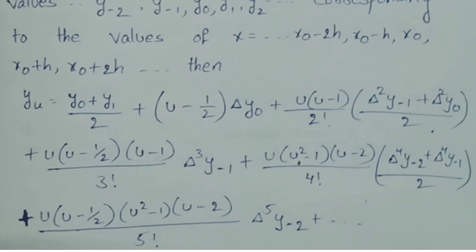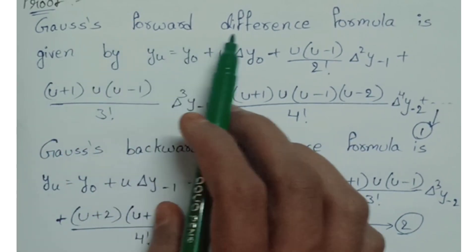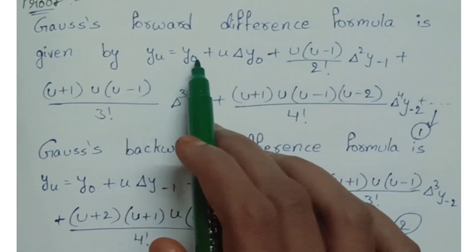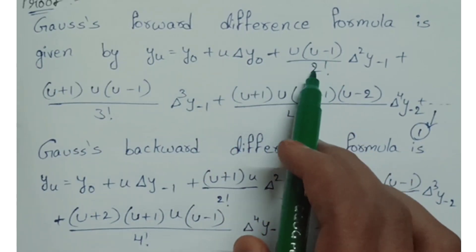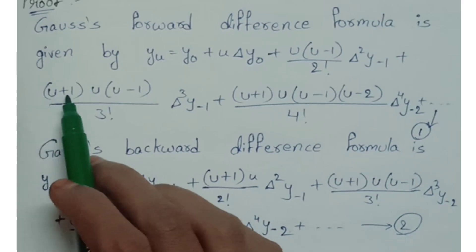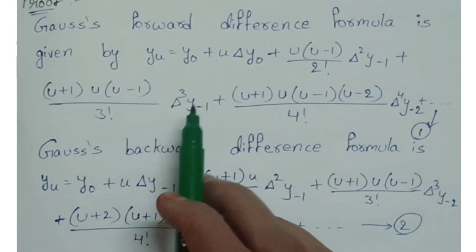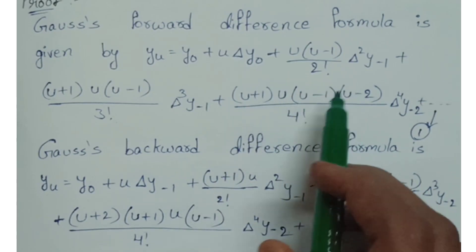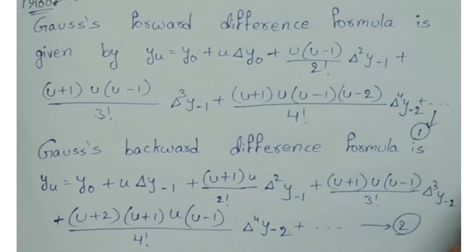Proof: We start from the Gauss forward difference formula. y(u) equals y0 plus u delta y0 plus u(u minus 1)/2! delta squared y minus 1 plus (u plus 1)u(u minus 1)/3! delta cubed y minus 1 plus (u plus 1)u(u minus 1)(u minus 2)/4! delta to the 4th y minus 2 and so on.